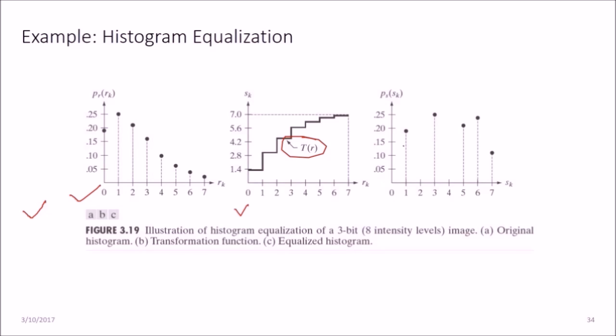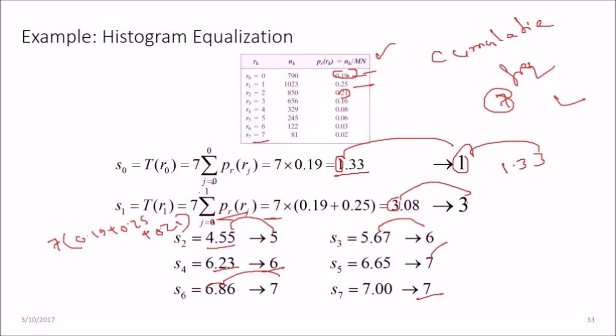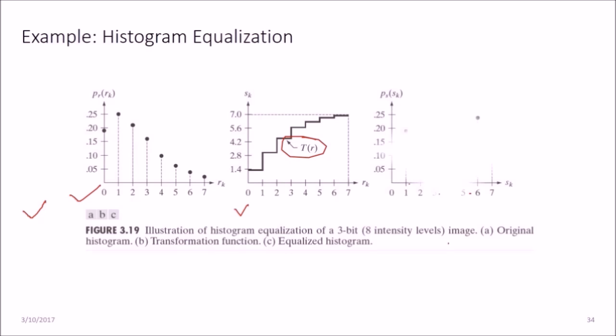So we have 1, 3, 5, 6, 7. That means 6.65, 6.86, and 7, these three will be equalized to 7. 6.23 and 5.67 will be equalized to 6. And then the distribution will be that all the pixel values corresponding to 1 will be 1, and 3 will be like this, 5 here, 6 here, 7 here.